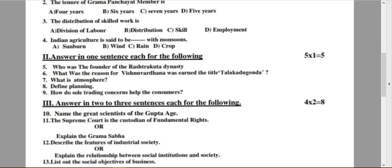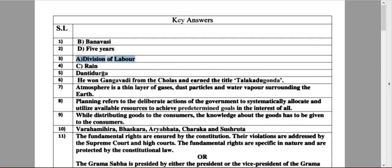The next question, question number 4: The Indian agriculture is said to be dash with monsoons. Option A: Sunburn. Option B: Wind. Option C: Rain. Option D: Crop. And the right answer is option C, Rain.